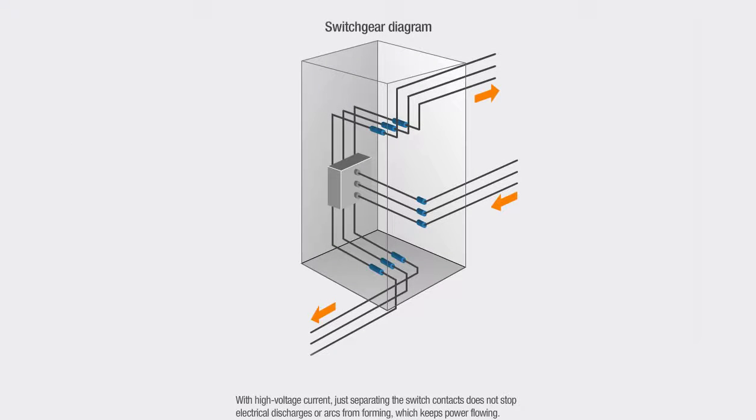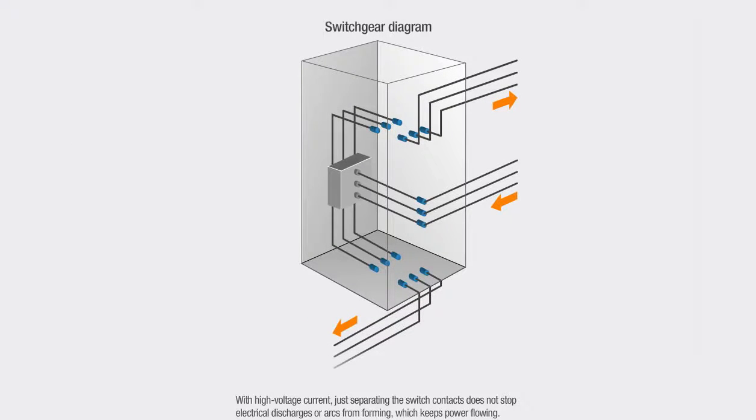With high voltage current, just separating the switch contacts does not stop electrical discharges or arcs from forming, which keeps power flowing.